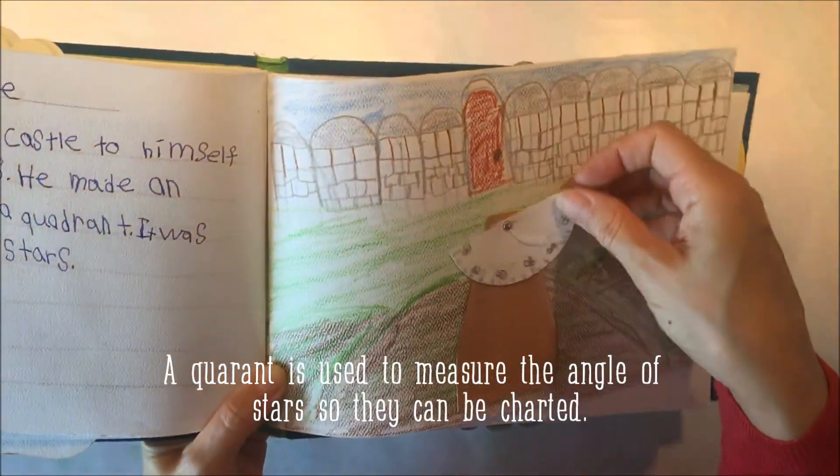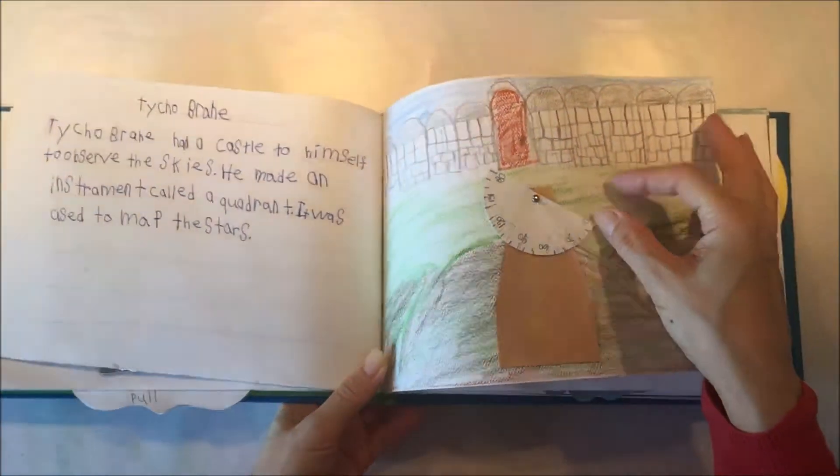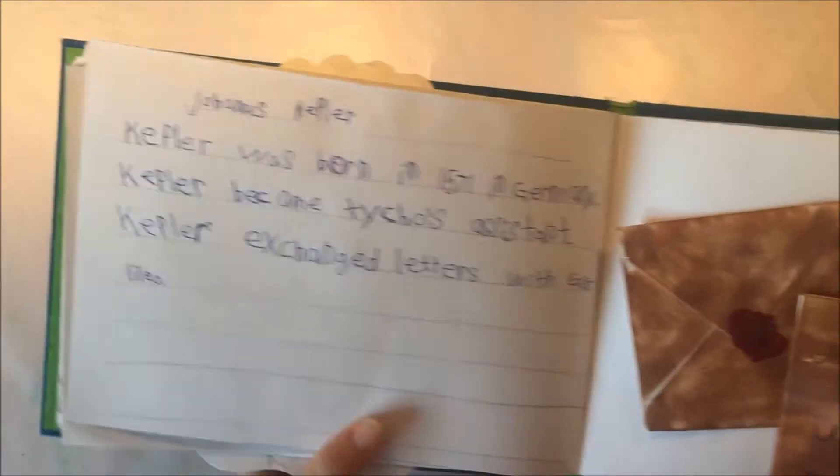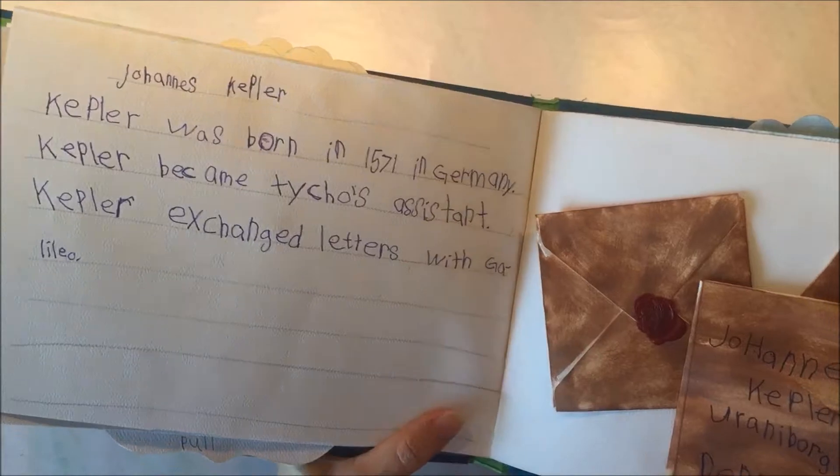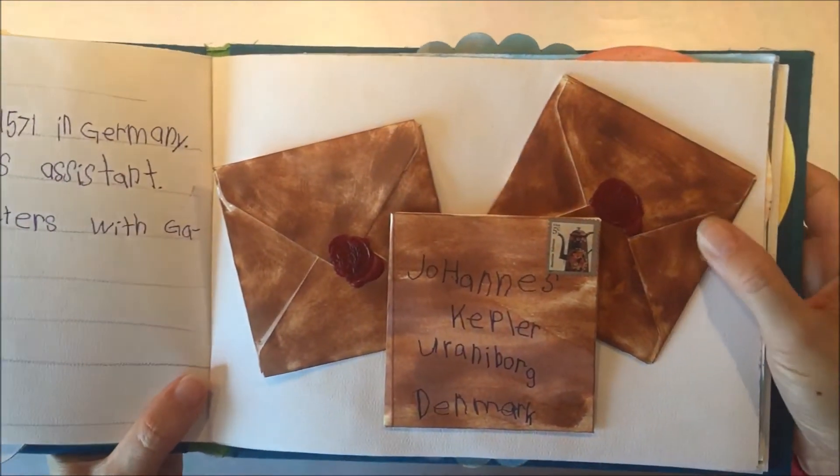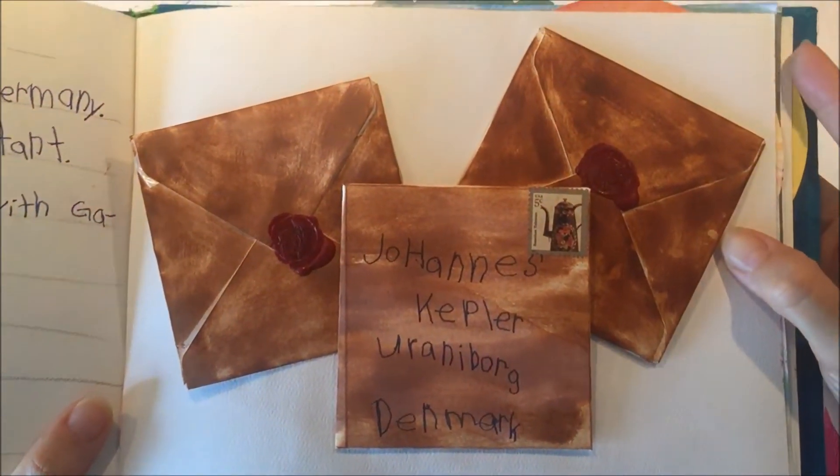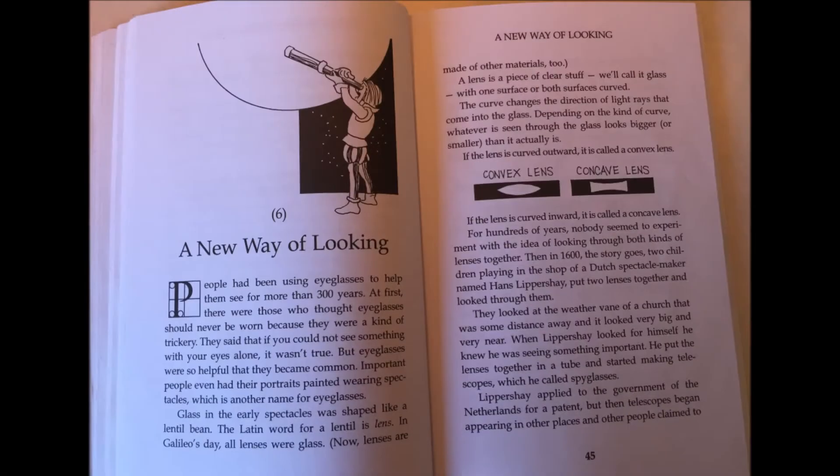So here's Tycho Brahe's quadrant that he invented. And next up is Johannes Kepler. And these are some of the letters that he also corresponded with other scientists of his day.